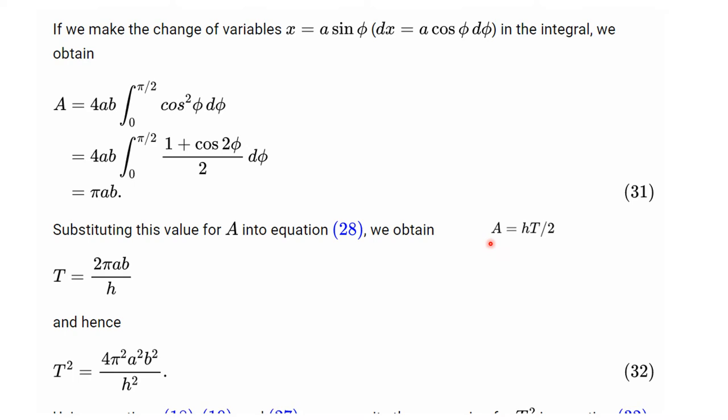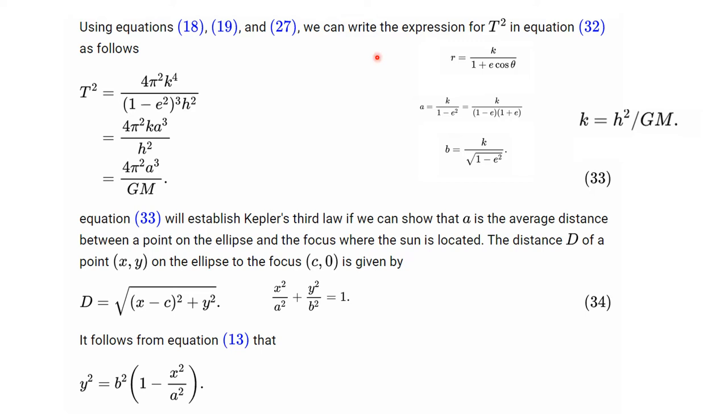Now what we're going to do is substitute that value into this equation. So we put pi AB into here, and we can solve for t. And that gives us t equals this. And if we square both sides, we get this. Now what we're going to do is use those equations I showed you before about expressions for r, k, a, and the eccentricity in k, and b in k. We use these formulas and this one to algebraically realize that this is t squared equals this. You should do that. But by the time we do all these substitutions, we get t squared equals 4 pi squared over gm a cubed. Now, you see, that will establish Kepler's third law if we can show that a is the average distance between a point on the ellipse and the focus where the sun is located.